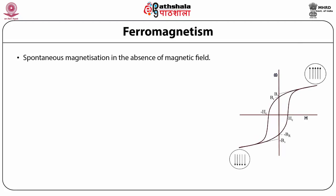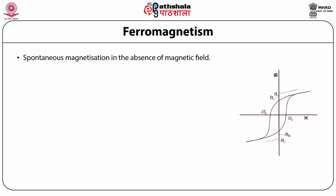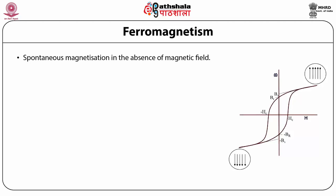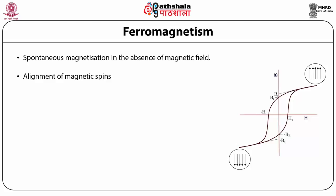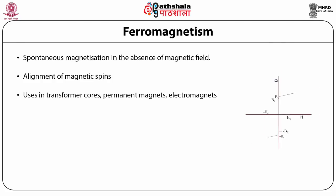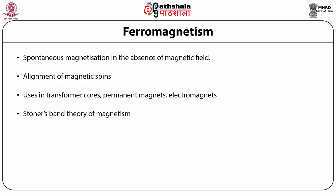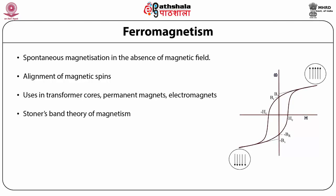Ferromagnetism is the spontaneous magnetization in the absence of a magnetic field. As seen from the B versus H curve, the saturation magnetization BS corresponds to the alignment of magnetic spins parallel to each other, whereas −BS corresponds to spins in the opposite direction. Ferromagnetism is used in transformer cores, permanent magnets, and electromagnets.